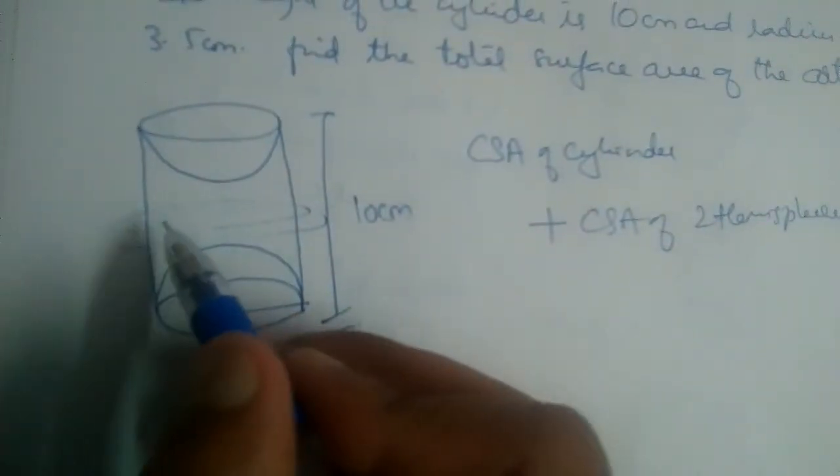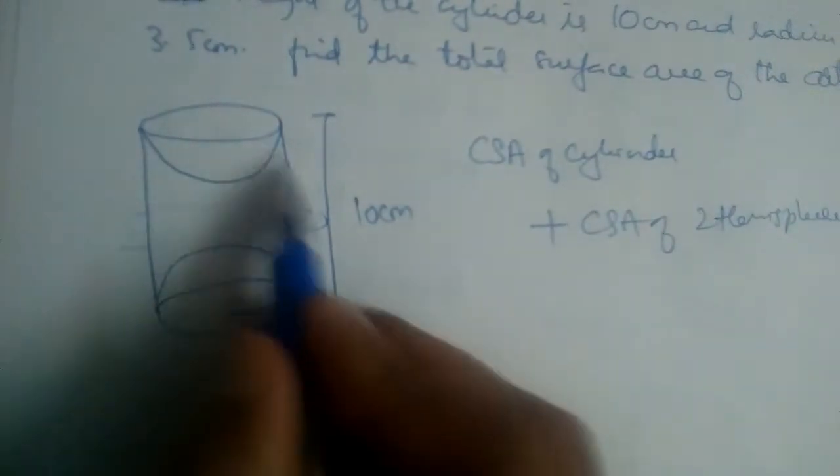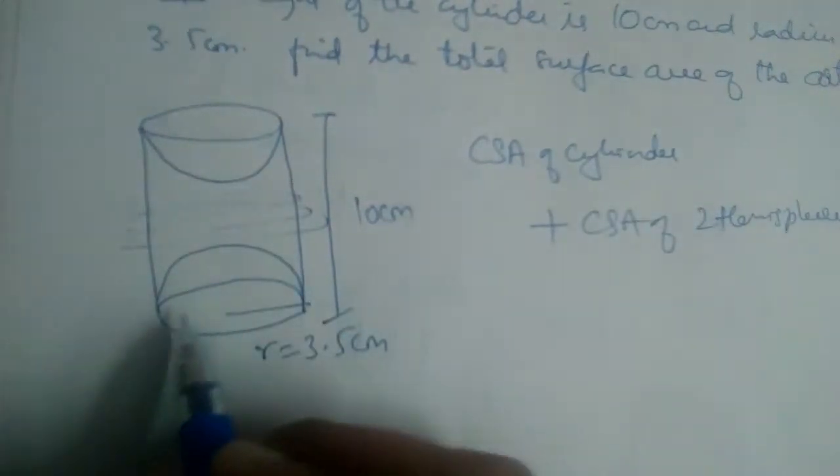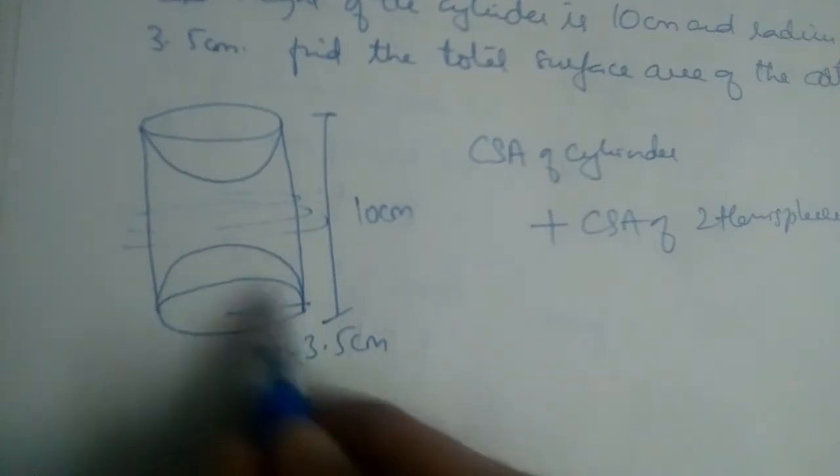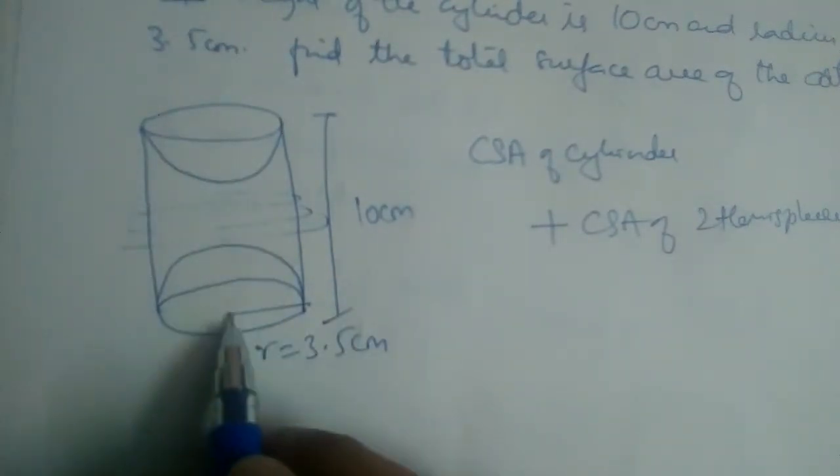But if we take this out, for example, let's say you want to paint this solid now. We will paint the outside, that is CSA of cylinder, and this inside part will also be there. We need to paint that also. Isn't it?